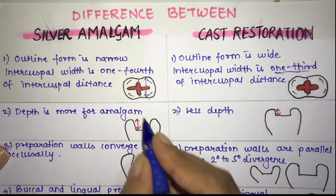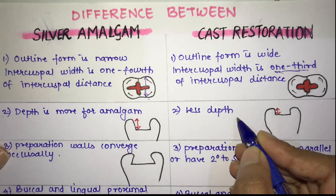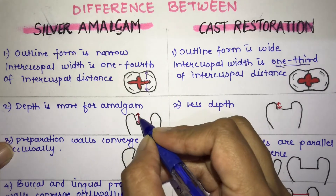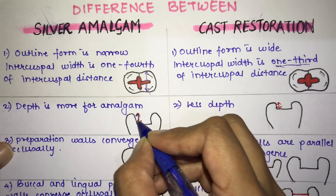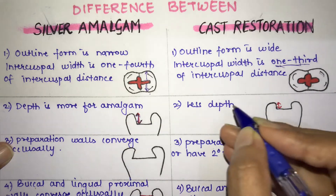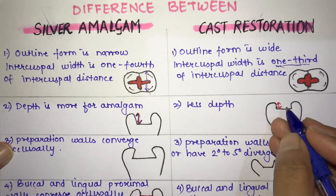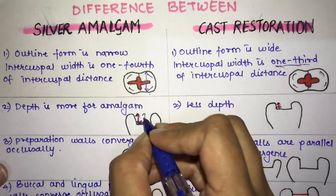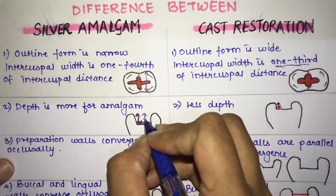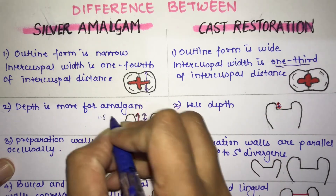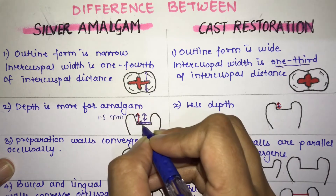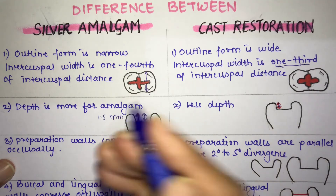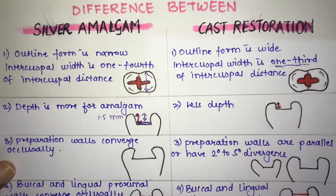The next difference is in depth. In silver amalgam the depth is more, whereas in cast restoration the depth is less. The preparation for amalgam is deeper, and the ideal depth is 1.5 mm. So amalgam restorations are deeper when compared to cast restorations.